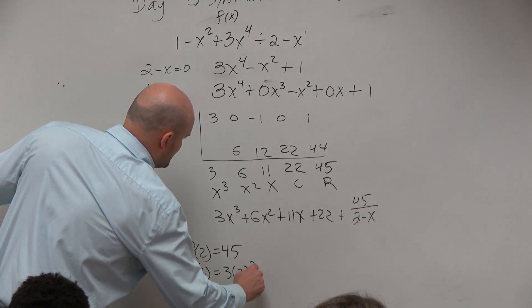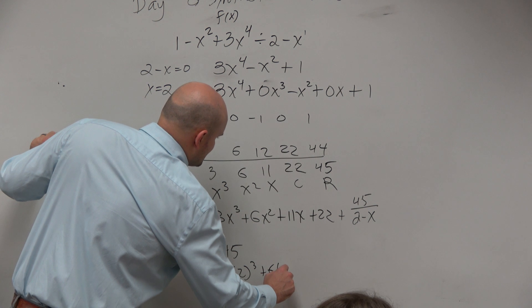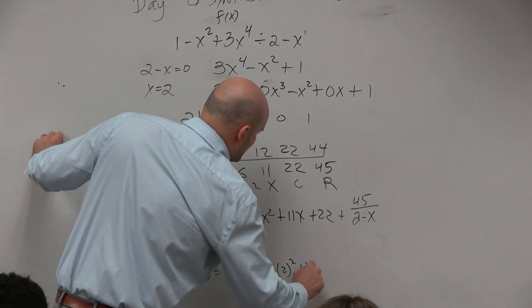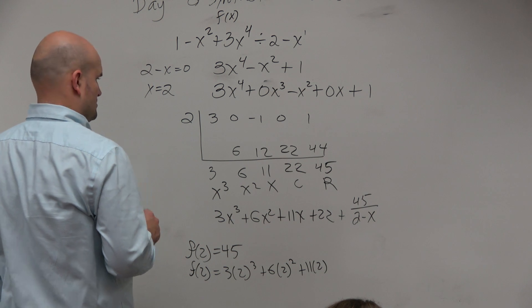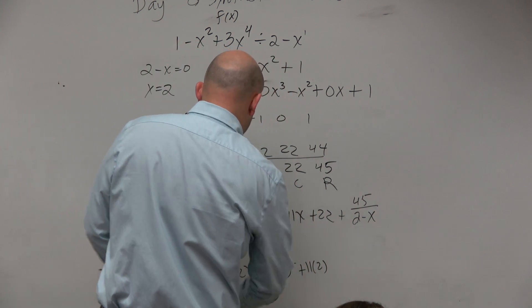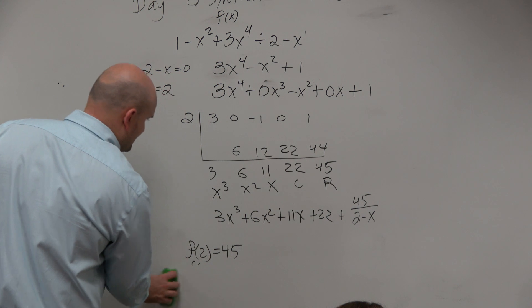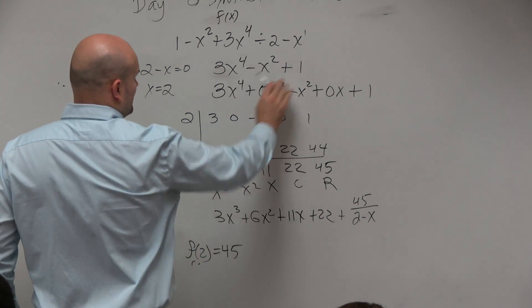3 times 2 cubed plus 6 times 2 squared plus 11 times 2 plus 22. Oh wait, I'm plugging that into the remainder, no wonder, I'm like, that's not going to work, right? You've got to plug it into that equation.